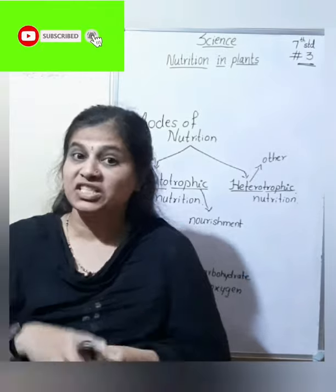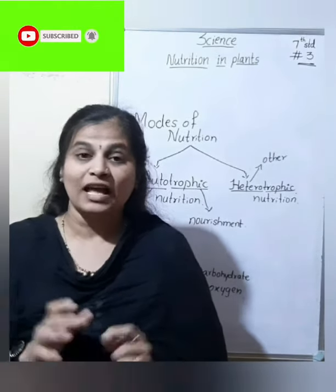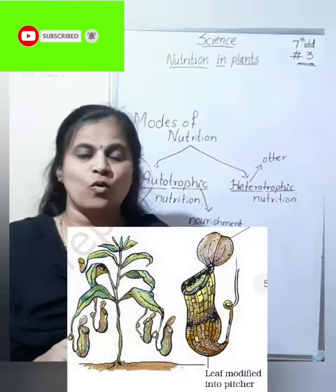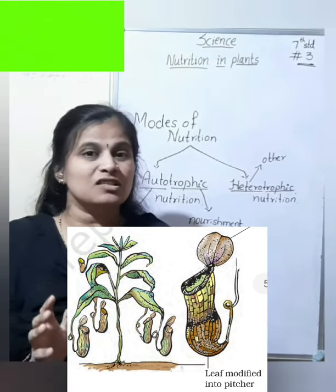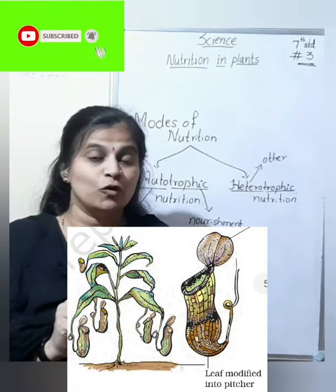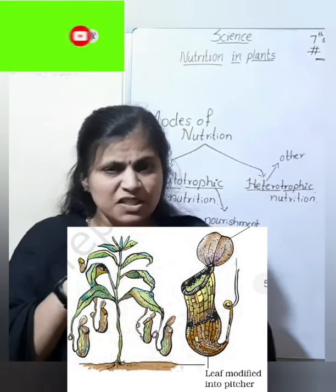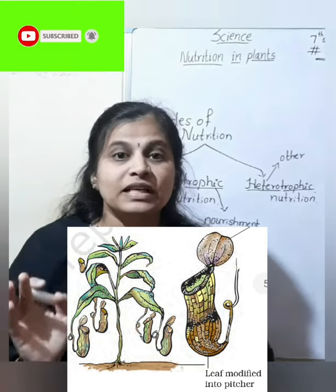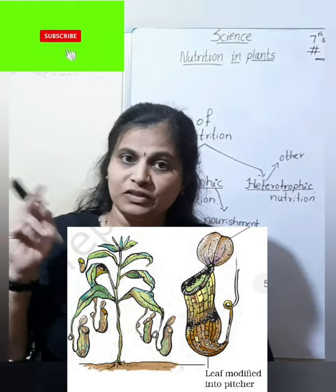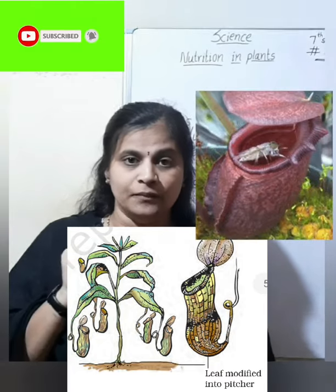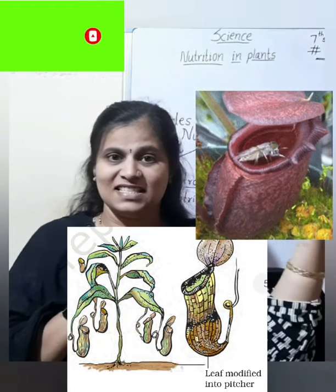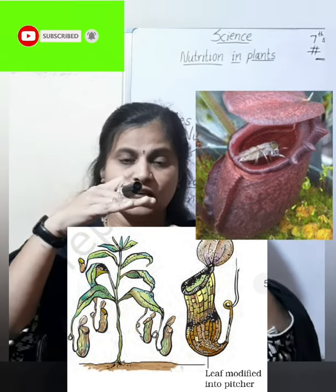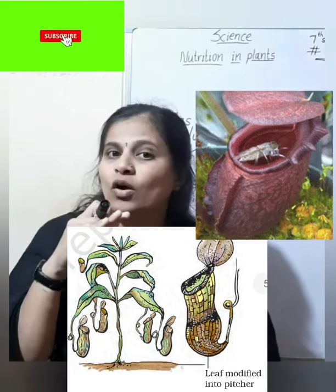There are some plants which trap insects to fulfill their nutrition. Can you imagine — a plant trapping an insect? Look at the picture. The pitcher plant has a pitcher-like or jug-like structure, which is a modified form of leaf. The apex part of the leaf is modified into a lid. As the insect sits over the pitcher, this lid closes immediately, and the insect slips inside.